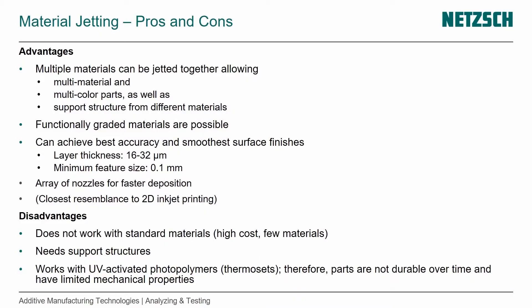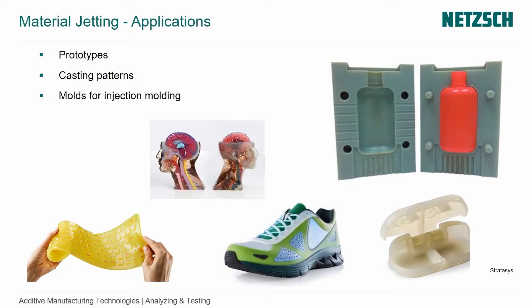You have an array of nozzles for faster deposition, which makes it the closest to 2D inkjet printing. The disadvantages are that with UV curable materials it does not work with standard materials, resulting in high cost and few material options. We need support structures, and because we work with UV-activated photopolymers, the parts are not durable over time and have limited mechanical properties. However, they have many advantages, which makes them widely used across many applications.